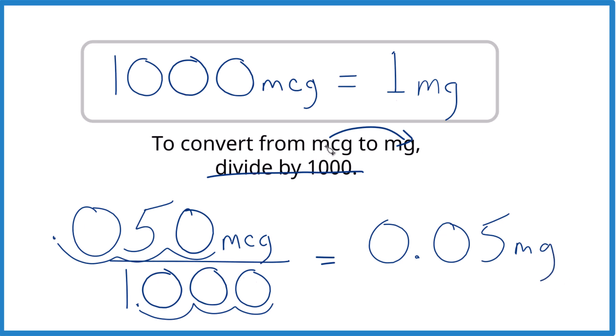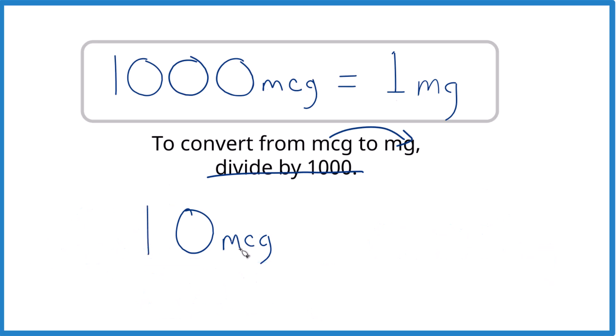So remember, micrograms to milligrams divide by 1000. Let's do it again, make sure that units work out. What if you had 10 micrograms? How would you get that to milligrams? Give it a try.